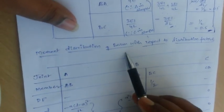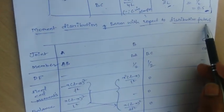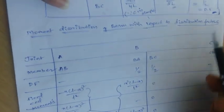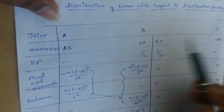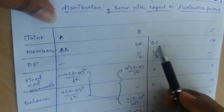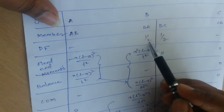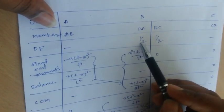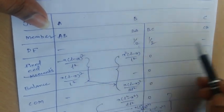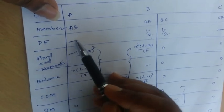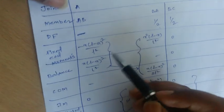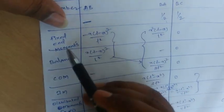Setting up the moment distribution table for beam A-B-C with joints A, AB, BA, BC, CB: distribution factors are written only for common joints — half at BA and half at BC. No distribution factor is assigned to the extreme ends A and C, as each has only one member.